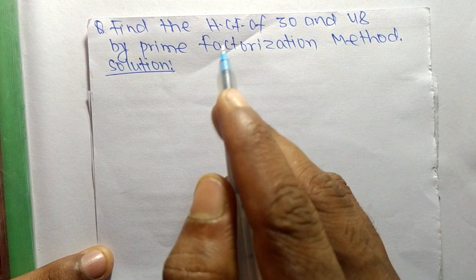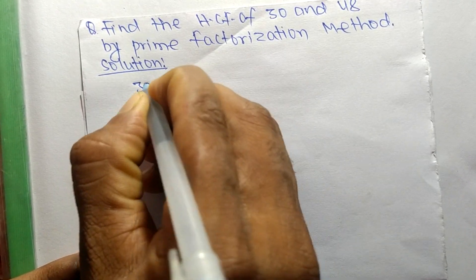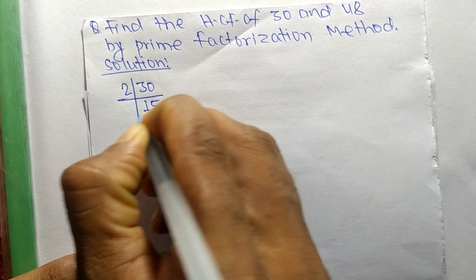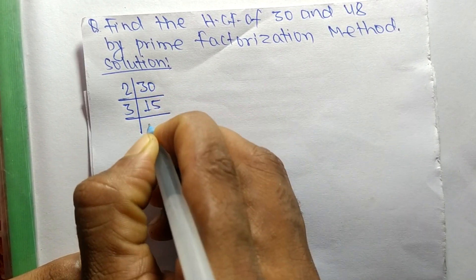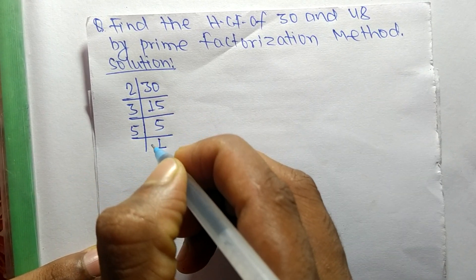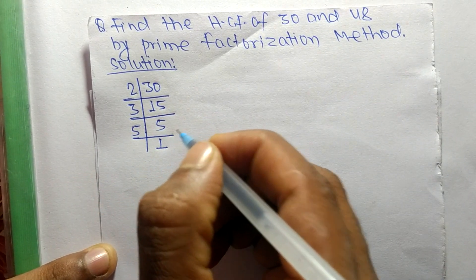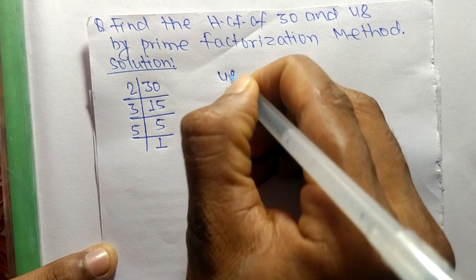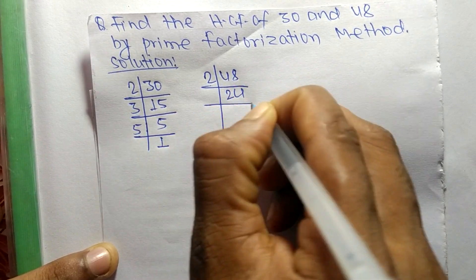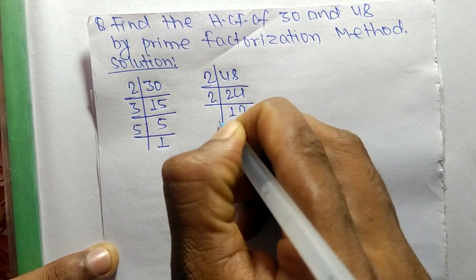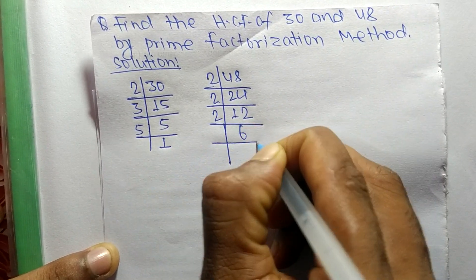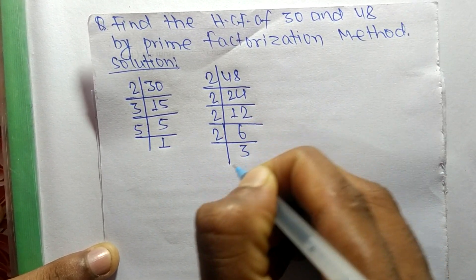First, we find the prime factors of 30: 2 times 15 equals 30, 3 times 5 equals 15, and 5 times 1 equals 5. Similarly, the prime factors of 48 are: 2 times 24 equals 48, 2 times 12 equals 24, 2 times 6 equals 12, and 2 times 3 equals 6.